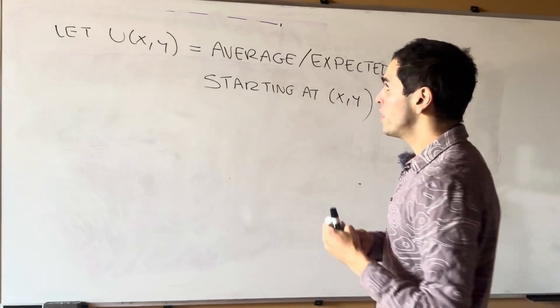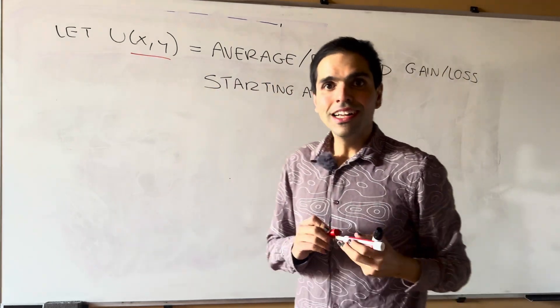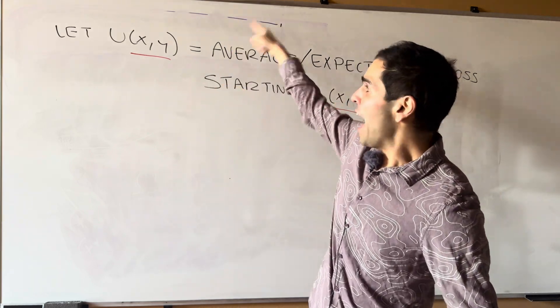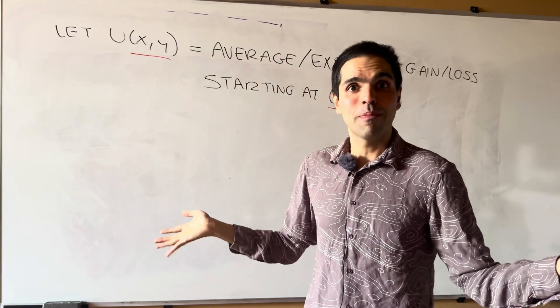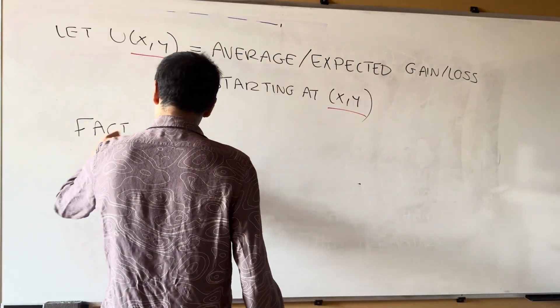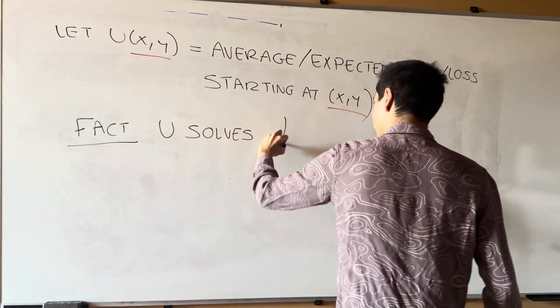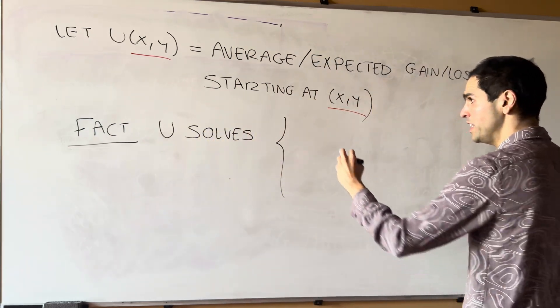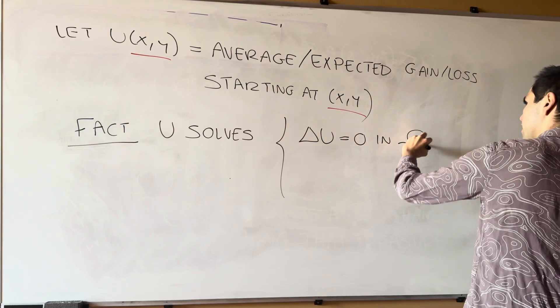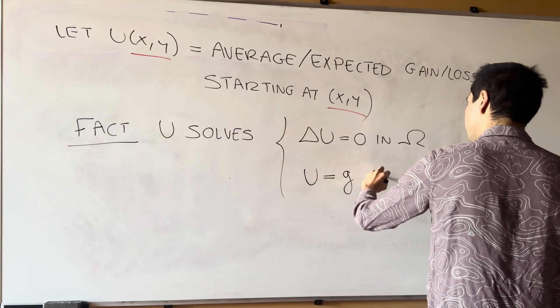So notice the only thing that changes is your starting position. And then the beautiful thing is, this average payoff actually solves Laplace's equation. So fact, u solves the following. In your region, it solves Laplace's equation. In the boundary, u is just g.